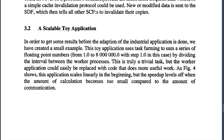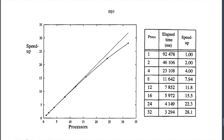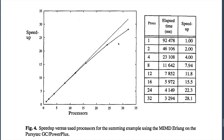To get some results before the adaptation of the industrial application is done, a small toy application was created. This toy application uses task farming to sum a series of floating point numbers from 1 to 8000 with a step of 1, by dividing the interval between worker processes. It is a trivial task, but the worker application could easily be replaced with code that does more useful work. As figure four shows, the application scales linearly in the beginning, but the speed-up levels off when the amount of calculation becomes too small compared to the amount of communication.